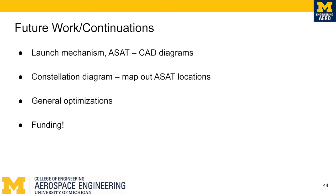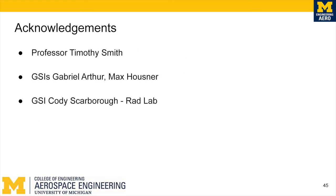As a team, we have now completed ODAM's preliminary mission requirement assessment and design overview on a theoretical level, and we can now move on to creating tangible deliverables. Our immediate next steps involve generating CAD diagrams for the launch mechanism and all the ASATs, which will eventually lead to FEA and CFD analyses. Our cost and mass budgets will update along the way as we add new materials and remove unnecessary design requirements. Once the ASATs have been designed, we can map out ASAT locations in the constellation and start calculating potential paths to target satellites and running simulations. We also need to find a source of funding. Throughout this design process, we received a lot of help from Professor Smith, GSIs Gabriel and Max, and GSI Cody Scarborough from the Rad Lab Center for providing resources regarding radiation-absorbing materials. Thank you.